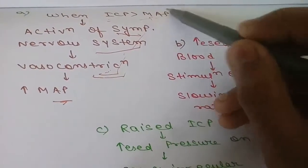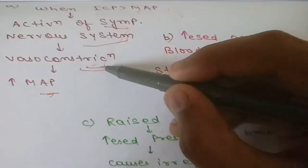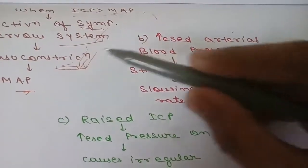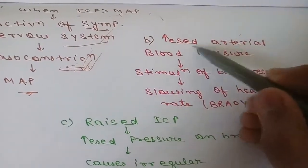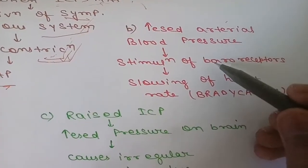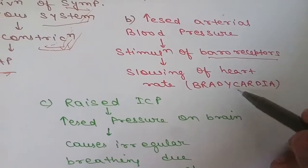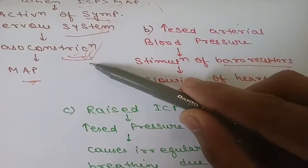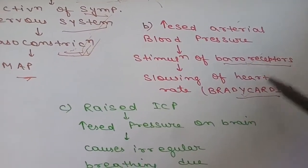So the first component is vasoconstriction, which increases arterial blood pressure. Once blood pressure is increased, it leads to stimulation of baroreceptors, which slow down the heart — that is bradycardia. So the first step is vasoconstriction, which stimulates baroreceptors, which in turn causes bradycardia.